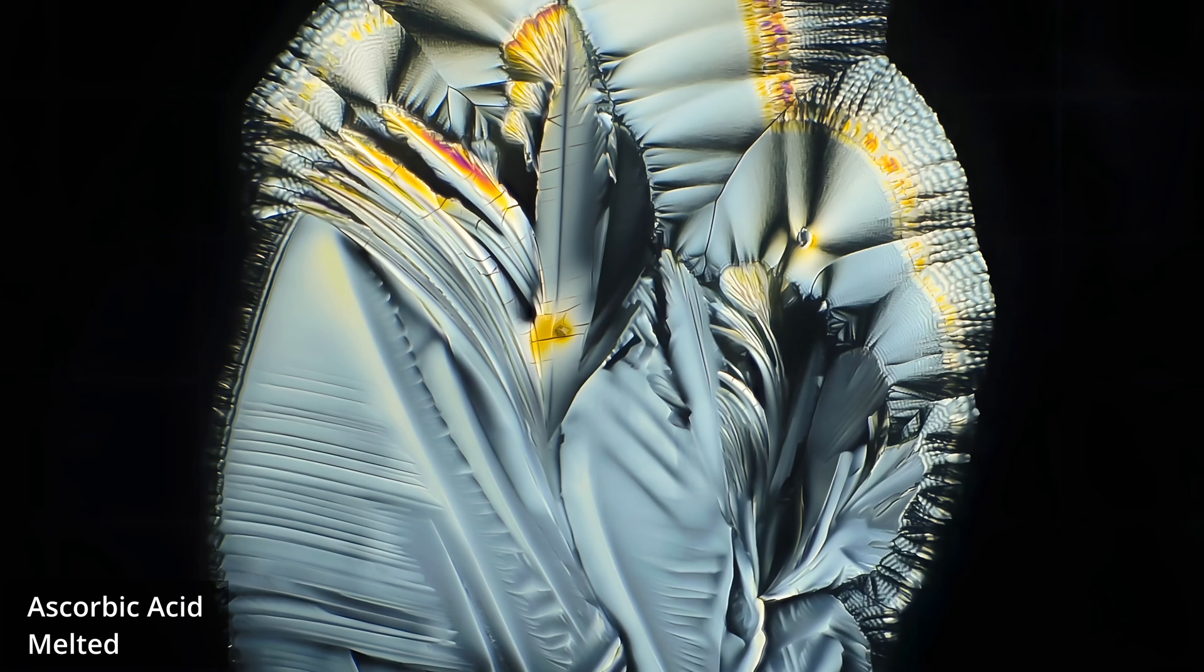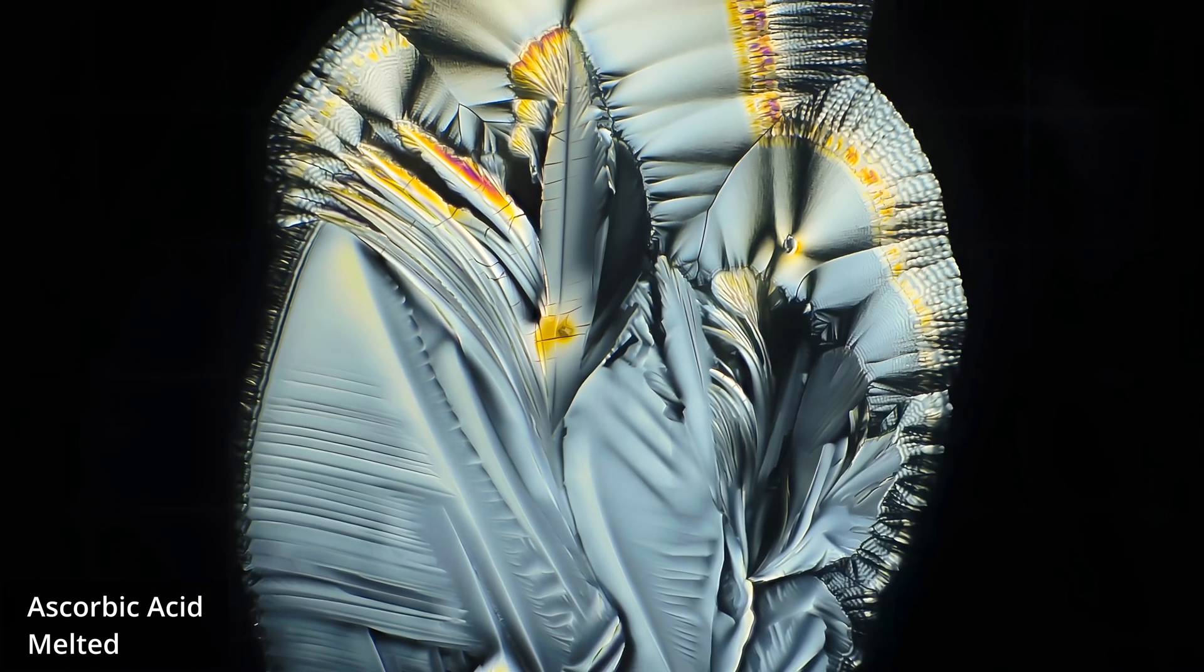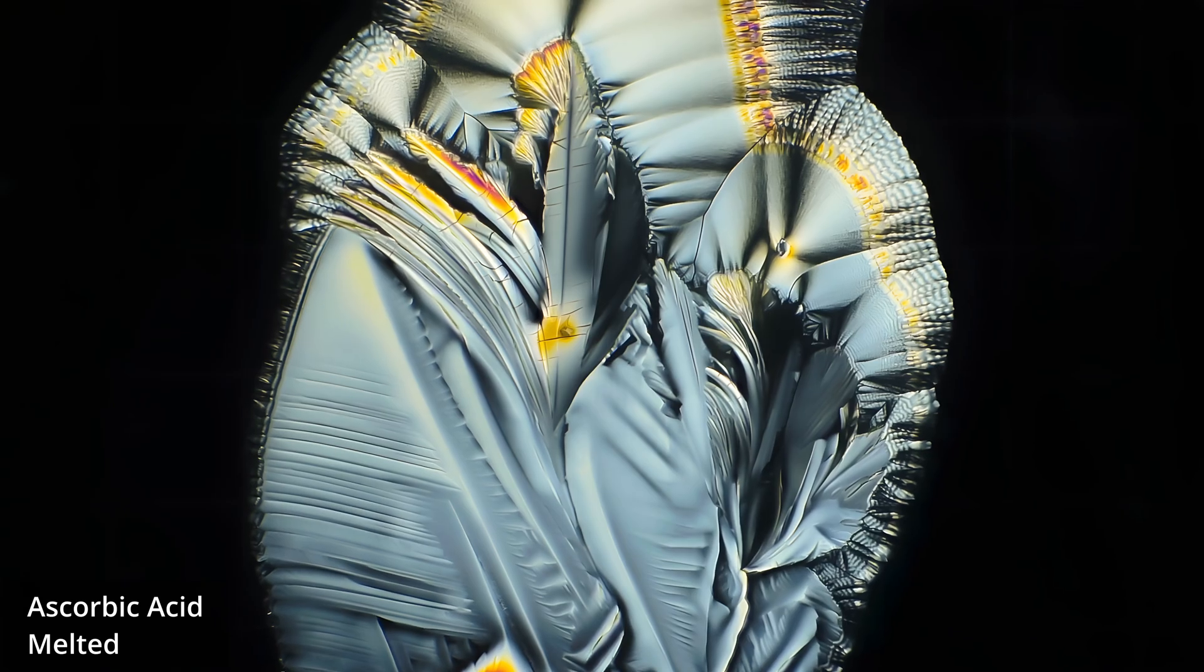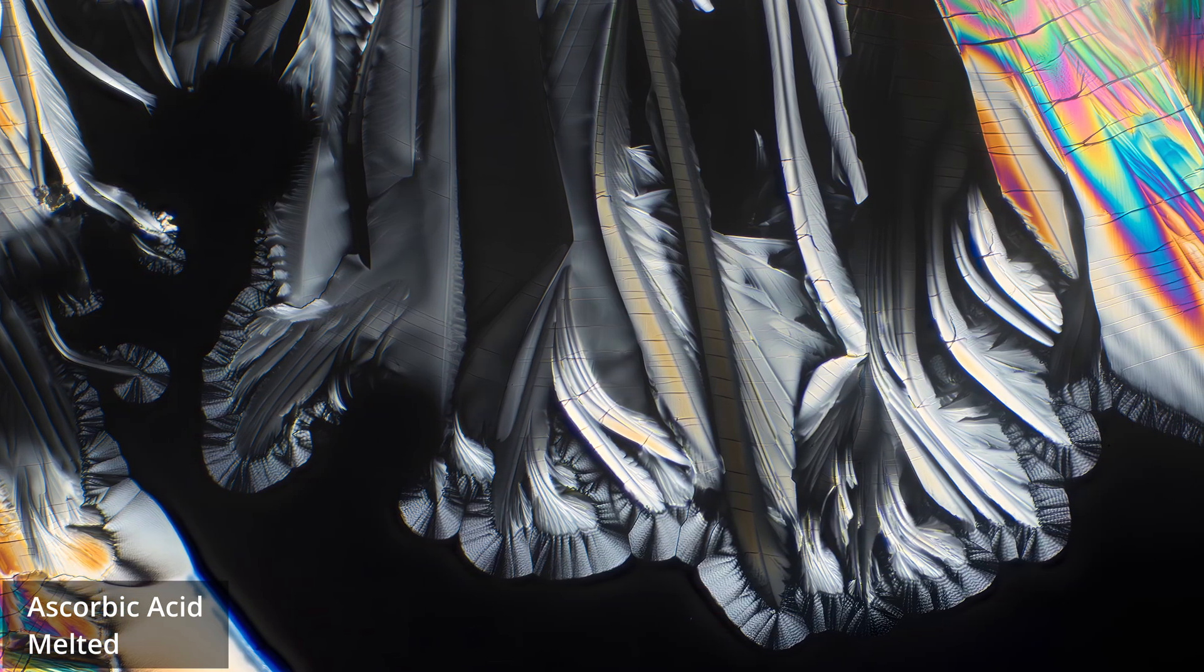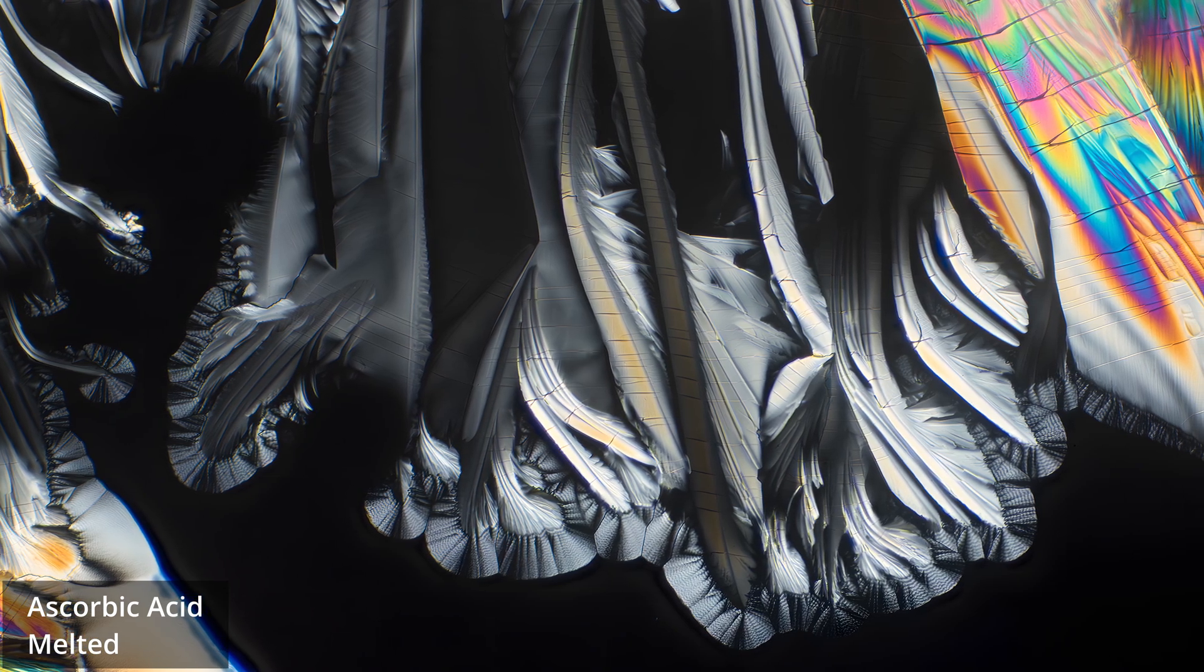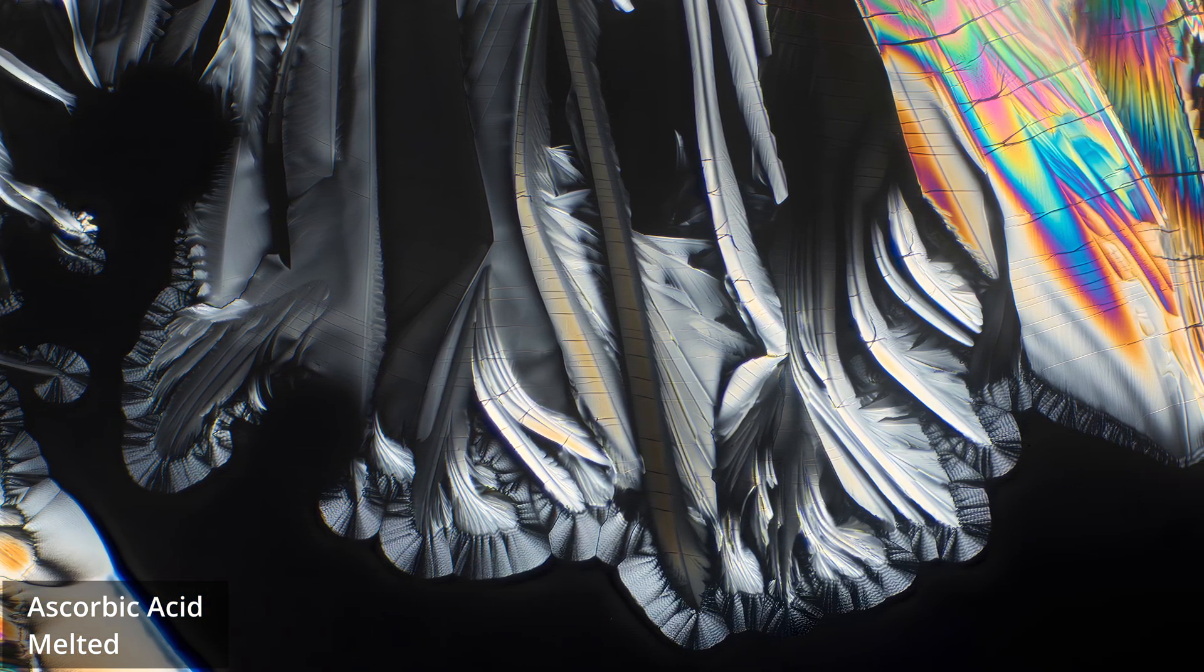When we melt a compound and let it cool, crystallization happens quickly. The molecules in the liquid phase have high mobility, but cooling reduces this rapidly. This creates what we call a kinetically controlled process. Crystals form fast, often with defects, creating the straighter, more geometric patterns you see here.